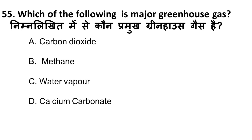Next question: which of the following is a major greenhouse gas? Options A, B, C are greenhouse gases and calcium carbonate is a solid, not a gas. Of A, B, and C — carbon dioxide accounts for 64 percent of total major greenhouse gases. So the correct answer is carbon dioxide.